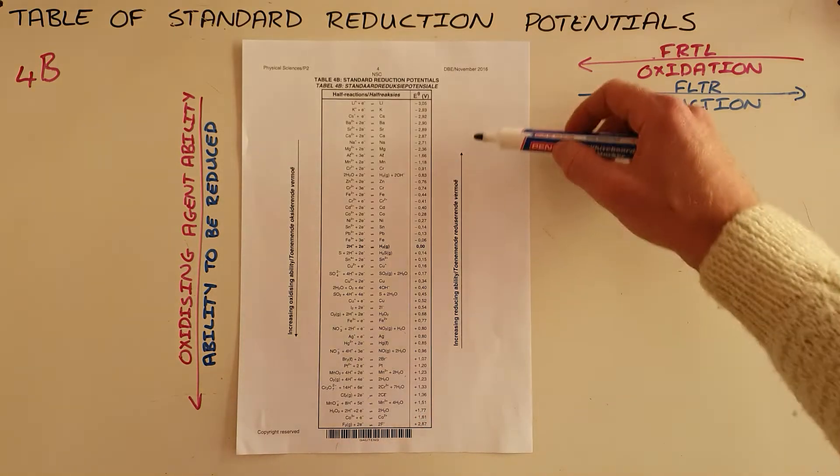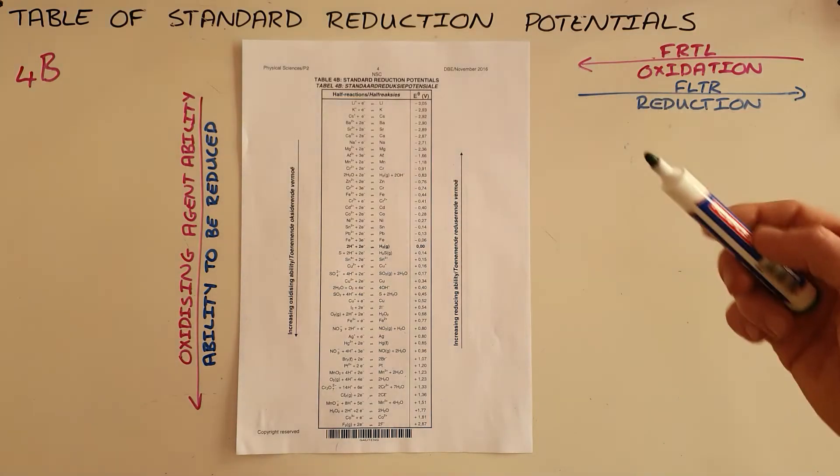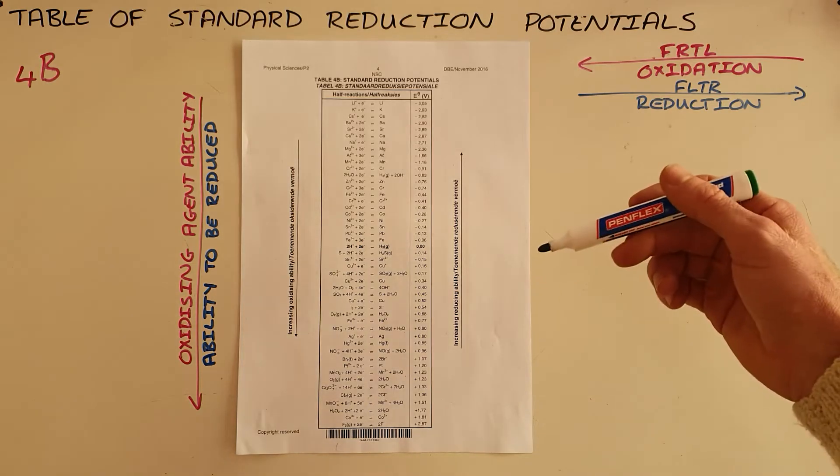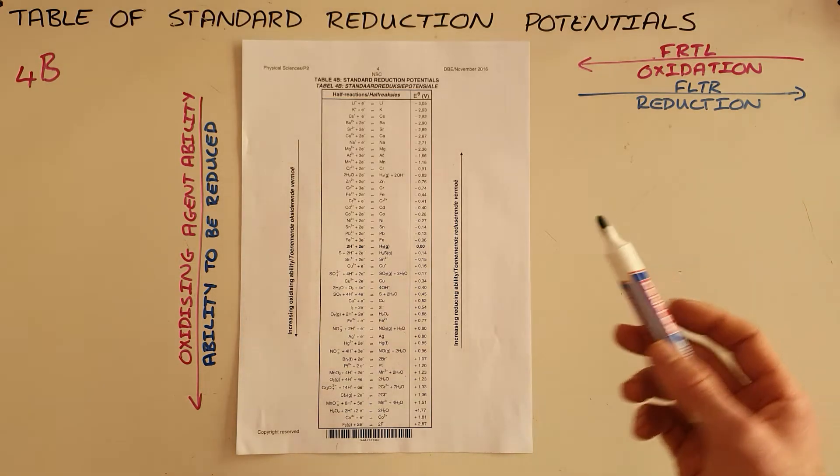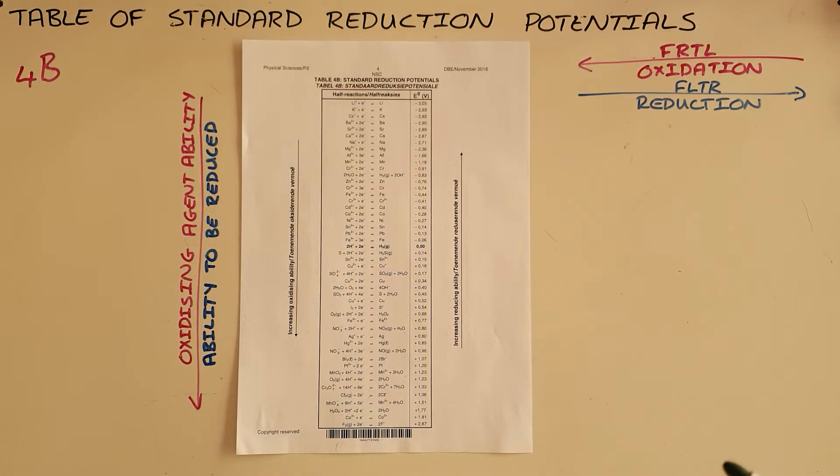The same applies on the right hand side with the increasing reducing ability, which actually means increasing ability to act as a reducing agent, or increasing ability to be oxidized. This suggests that lithium right at the top is the most easily oxidized.